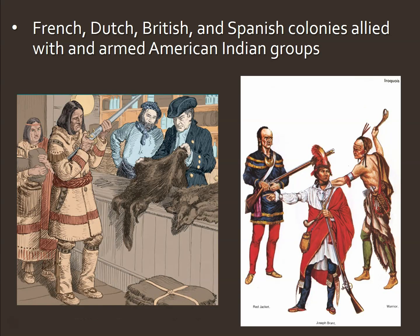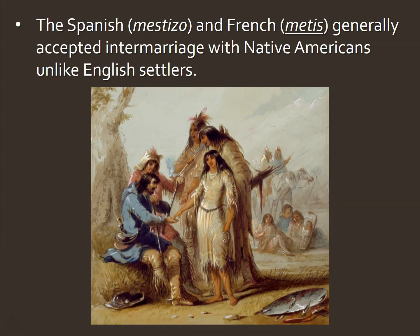On the cooperation side, Native Americans were seen as potential buyers for French, Dutch, British, and Spanish weapons, and also as potential allies in conflict. So Europeans would arm the Indians with weapons. We also looked in a previous section about intermarriage between Europeans and Native Americans — far more common with the Spanish, where we get Mestizo, and the French, where we get Métis. It was not as common with the English settlers.